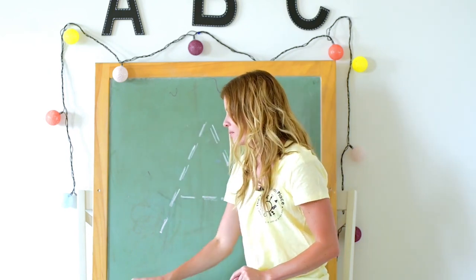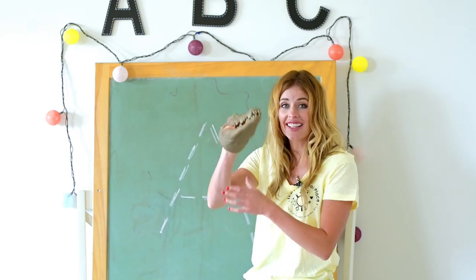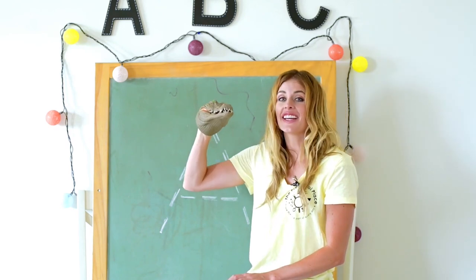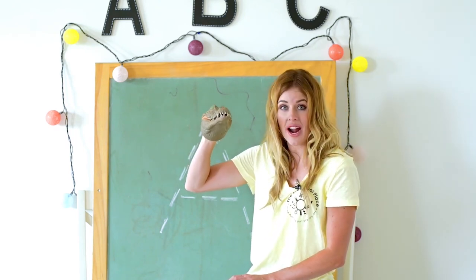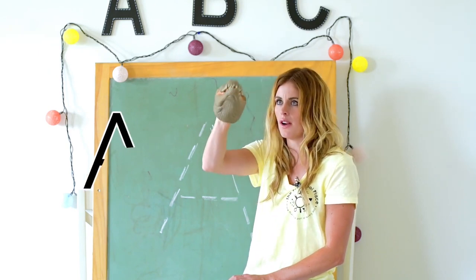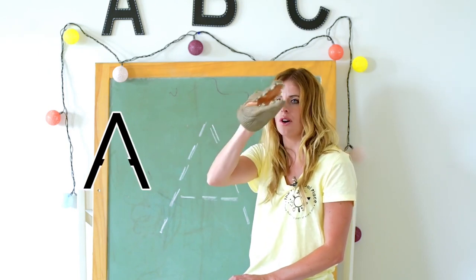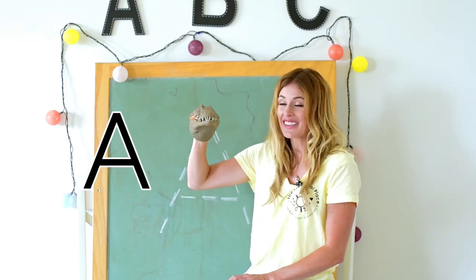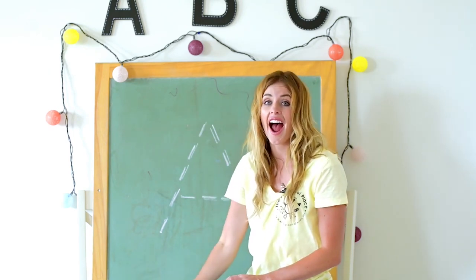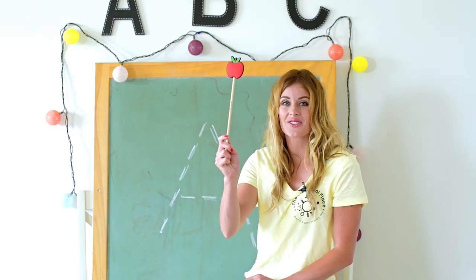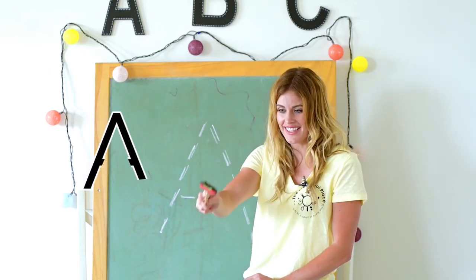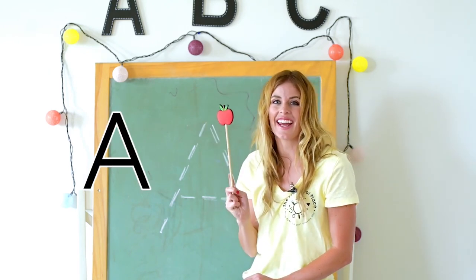I know who could help us — Al the alligator. Al, can you help us say our writing prompts for A? Slant down, slant down, across A. Good job, Al. Let's use an apple wand to write it: slant down, slant down, across A.